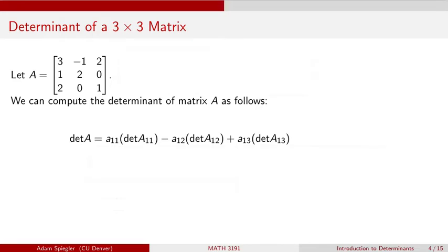Let's consider the following example. We have a three by three matrix A. The first column is 3, 1, 2; the second column is -1, 2, 0; and the third column is 2, 0, 1. We would like to compute the determinant of this matrix. One way to define the determinant of this three by three matrix A is by using submatrices.